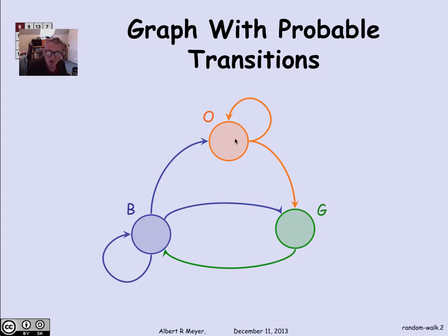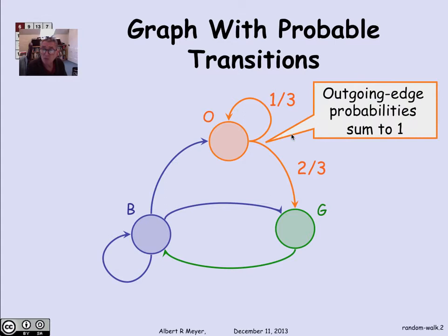The part that becomes probabilistic is that we think of the process of which edge to follow when you're at a given state as made probabilistically. The only rules are that we assign probabilities to the edges in a way like this, where, for example, there's a one-third probability that I'll follow the edge from O to O and a two-thirds probability from O to green. The rule is simply that the sum of the probabilities on the outgoing edges has to sum to 1.